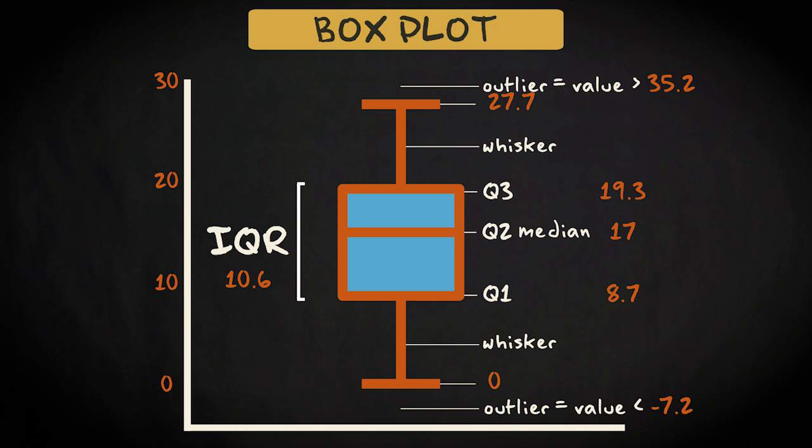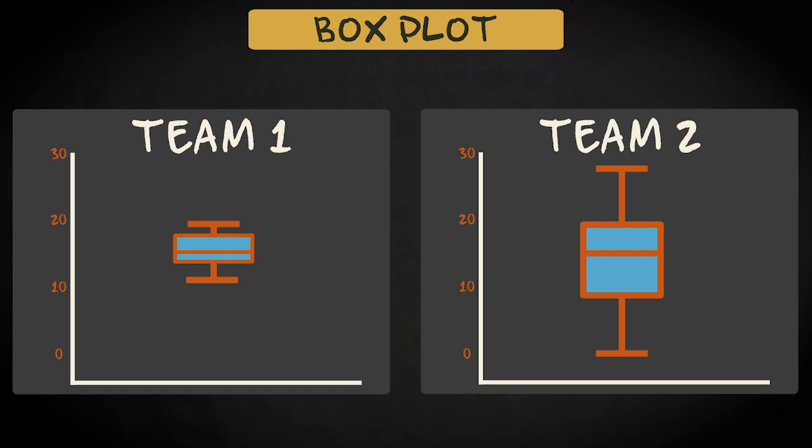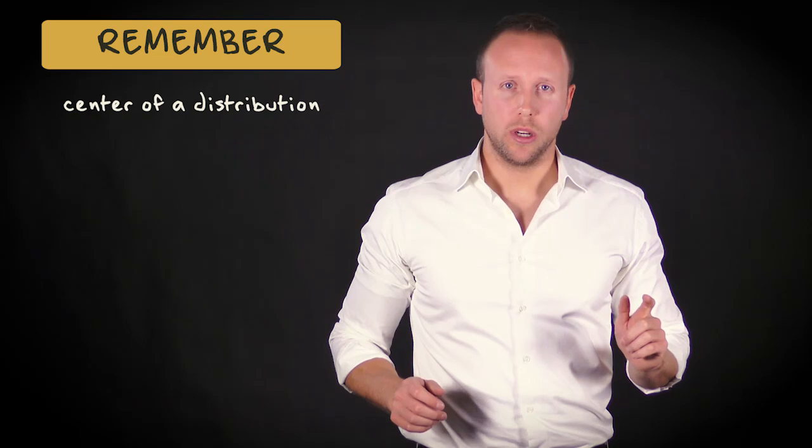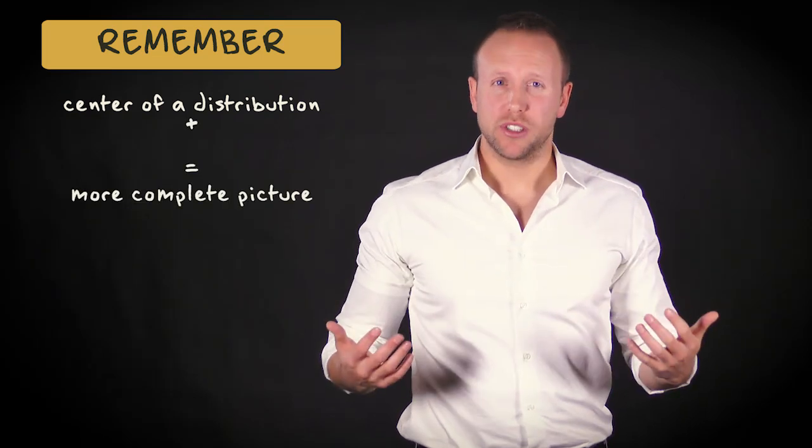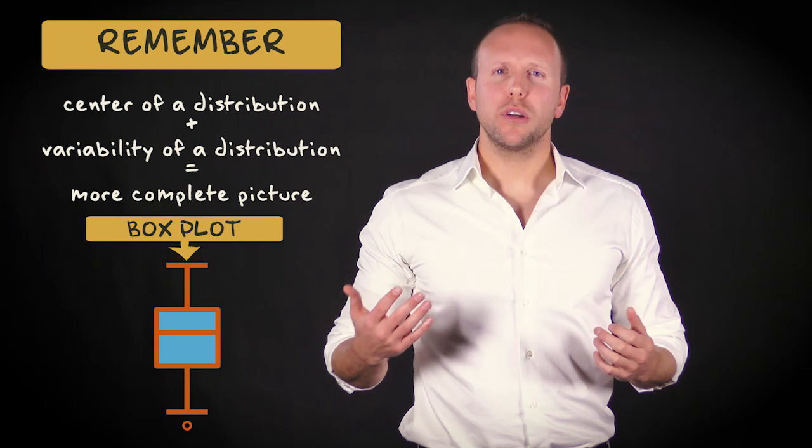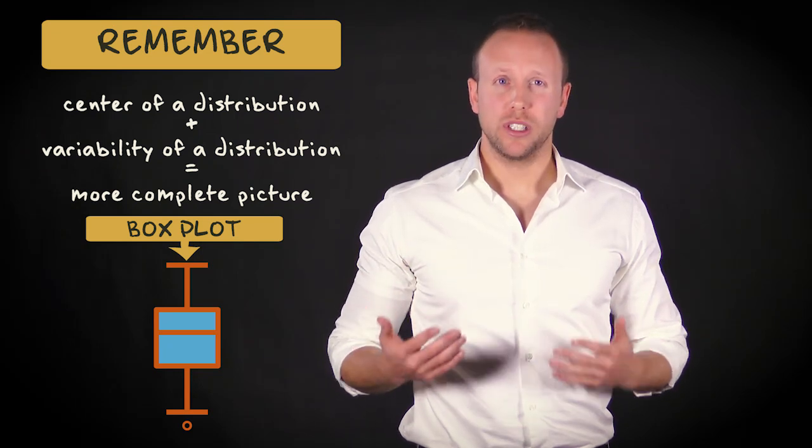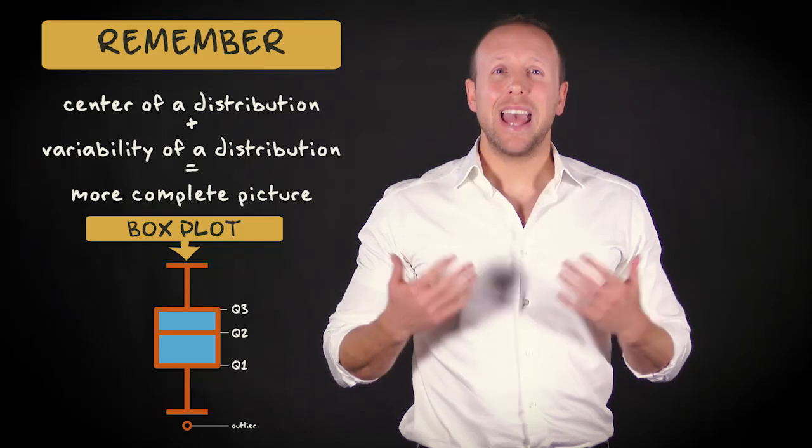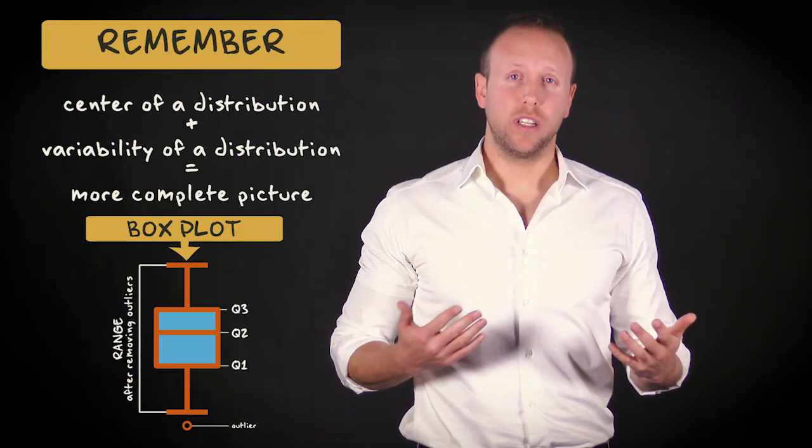So, let's also take a look at the boxplot of team 1. If we compare the two boxplots, we see immediately that the variability within the two distributions differs strongly. So remember, the center of a distribution only tells you one part of the story. For a more complete picture, also assess the variability of a distribution. A boxplot shows important aspects of a distribution in a compact way, using three quartiles, the outliers, and the range of the data after removing the outliers.